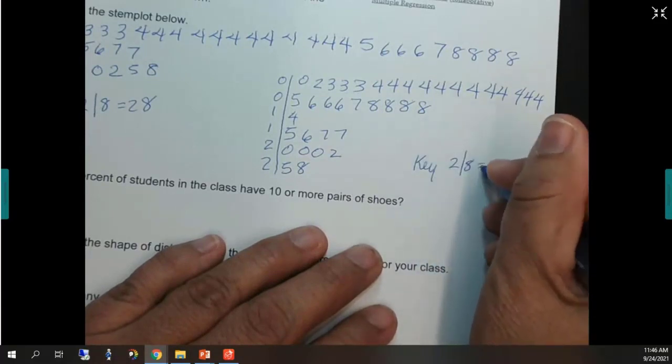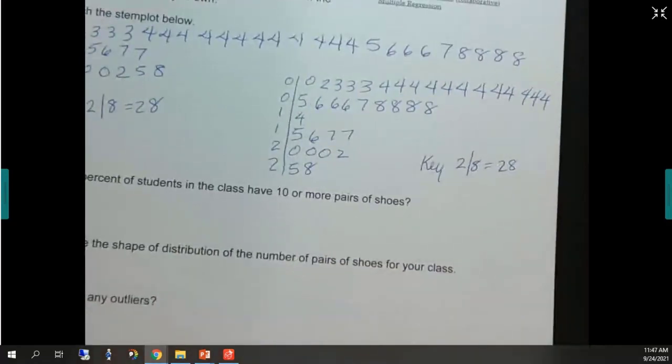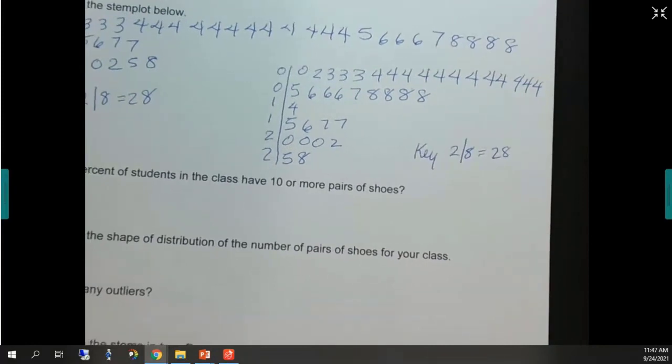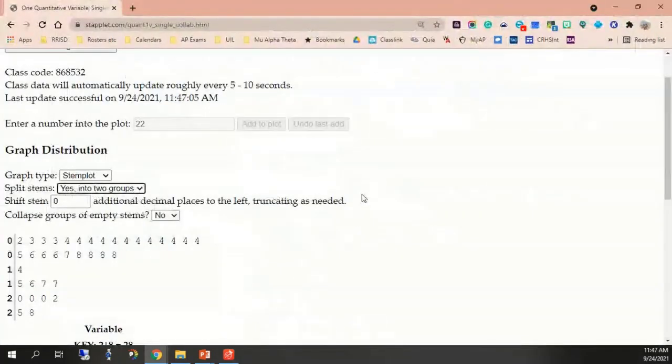Huh? What do you mean? Why is it, did you try splitting your stems on your stem plot? So go to the staplet. There's a switch there. Guys, is everyone, I'm going to double check that everyone has that stem plot showing on their data.